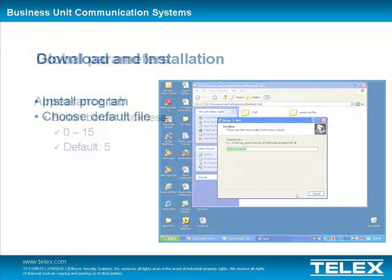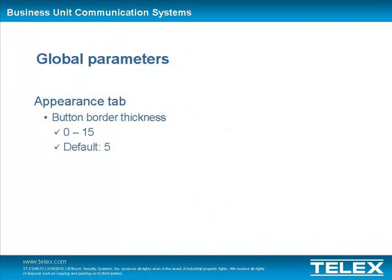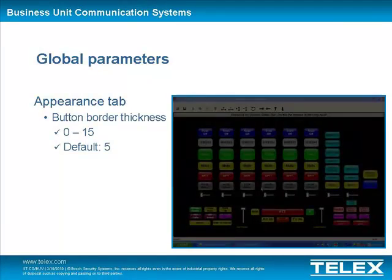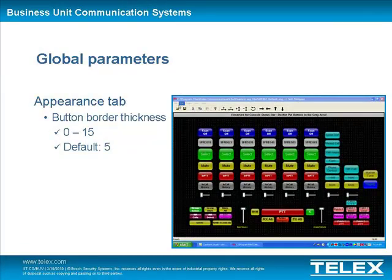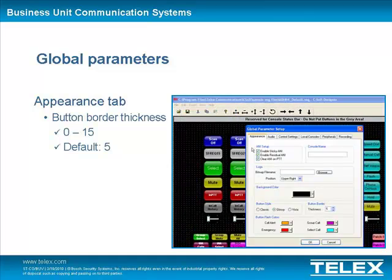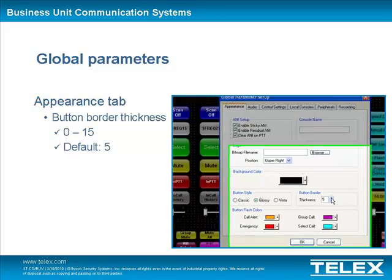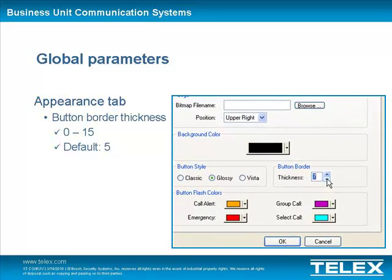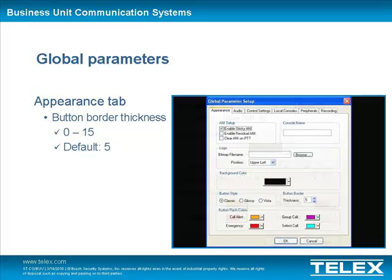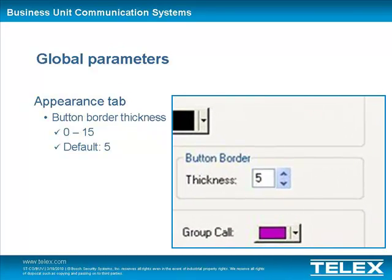Once you've installed version 5, take some time to observe the new items that have been added to improve the overall appearance of your digital console. For example, a Button Border Thickness field was added to the Appearance tab in the Global Parameters. This field controls the width of the UI button borders. The field ranges from 0 to 10, and 5 is the default thickness. The button border thickness increases as the value becomes larger.